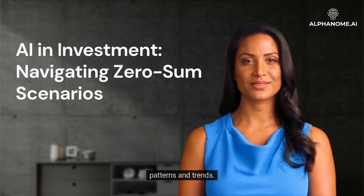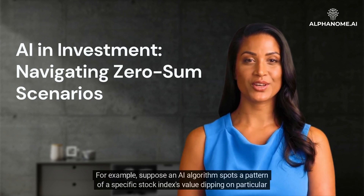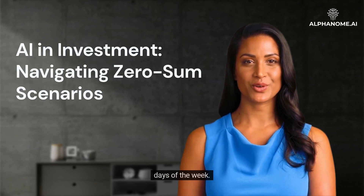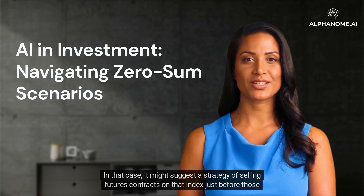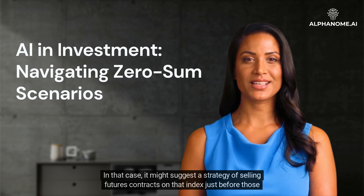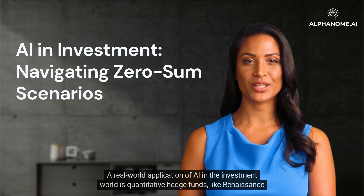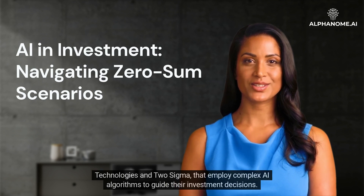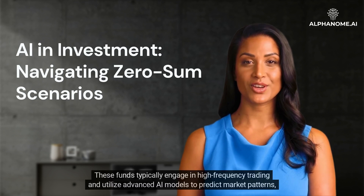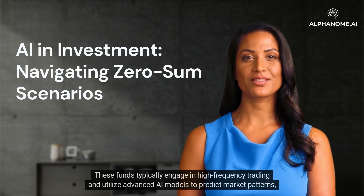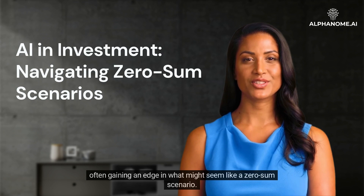For example, suppose an AI algorithm spots a pattern of a specific stock index's value dipping on particular days of the week. In that case, it might suggest a strategy of selling futures contracts on that index just before those days, potentially profiting from the expected decline. A real-world application of AI in the investment world is quantitative hedge funds, like Renaissance Technologies and Two Sigma, that employ complex AI algorithms to guide their investment decisions, often gaining an edge in what might seem like a zero-sum scenario.